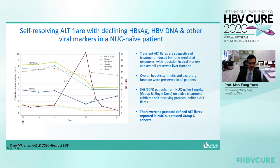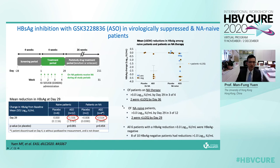This slide shows a single representative self-resolving ALT flare in a treatment-naive patient, associated with concomitant reduction of surface antigen, HBV DNA, and other biomarkers. The ALT elevation temporarily followed reduction of surface antigen and HBV DNA, suggestive of a treatment-induced immune-mediated response. In this group of treatment-naive patients, three out of six patients exhibited self-limiting protocol-defined ALT flares. However, liver synthetic and excretory functions were all preserved. In nucleoside-suppressed patients receiving four monthly doses, no protocol-defined ALT flares were reported.